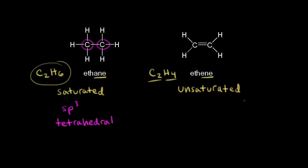For ethene, this carbon and this carbon are both sp2 hybridized. We know the geometry around an sp2 hybridized carbon is trigonal planar, so there's planar geometry around both of these carbons.